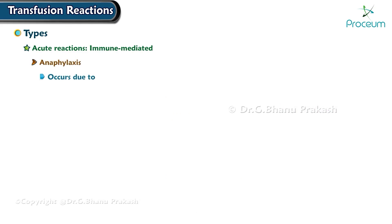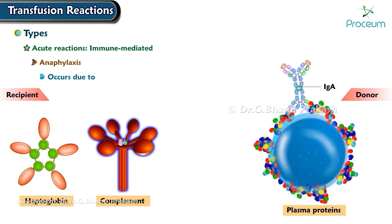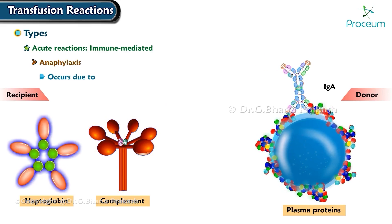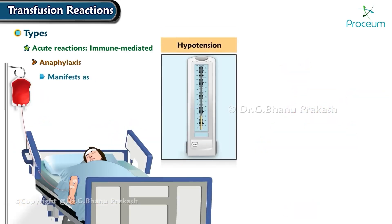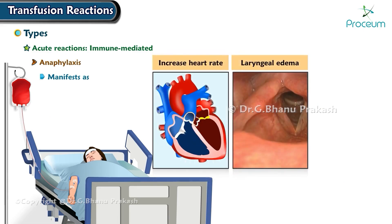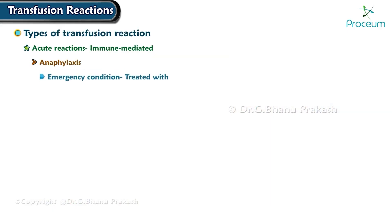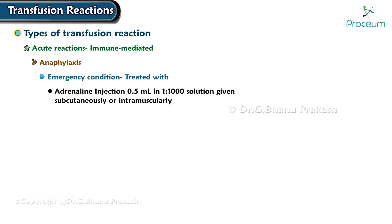Anaphylaxis occurs due to the recipient's antibodies reacting against donor plasma proteins such as IgA, haptoglobin, etc. It manifests as hypotension, bronchospasm, increased heart rate, laryngeal edema, and stridor. Those with IgA deficiency are at highest risk. It is an emergency condition treated with adrenaline injection of 0.5 milliliters in 1:1000 solution given subcutaneously or intramuscularly. Use of steroids, antihistamines, and IgA-deficient blood is also helpful.